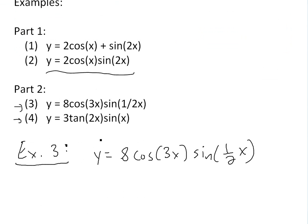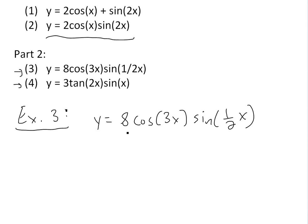So if I write down this function here, Example 3: y equals 8cos(3x) times sin(1/2 x). The first thing we have to do is find the periods of the two functions that are combined in this main function.